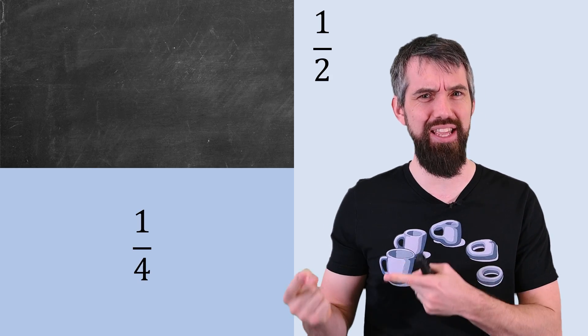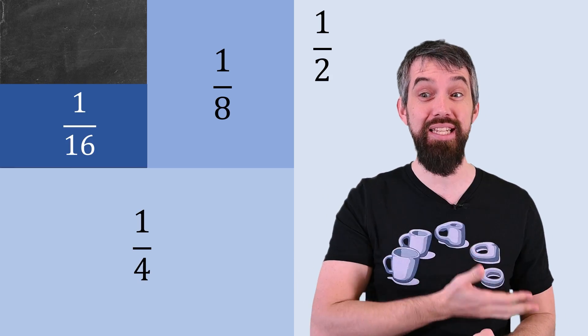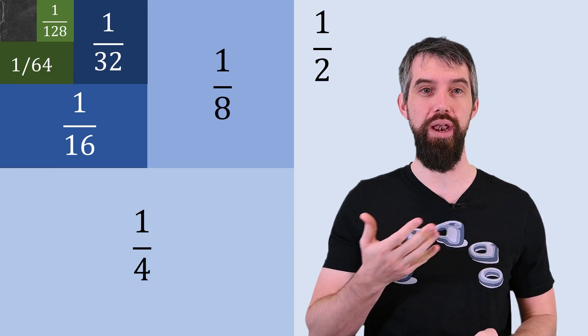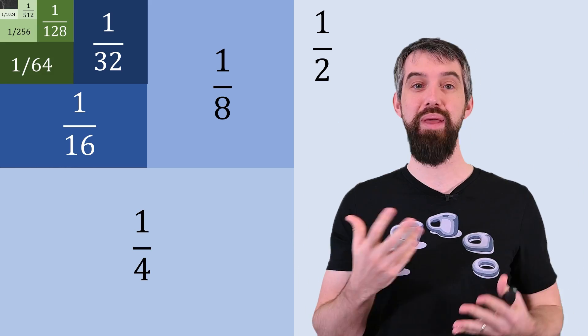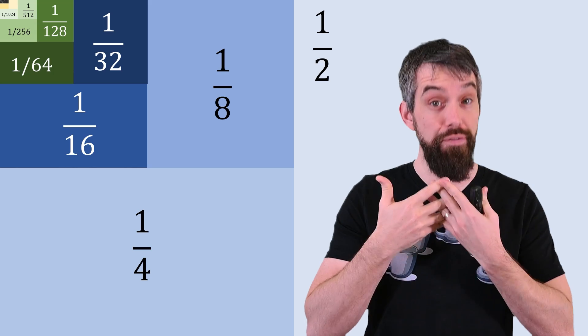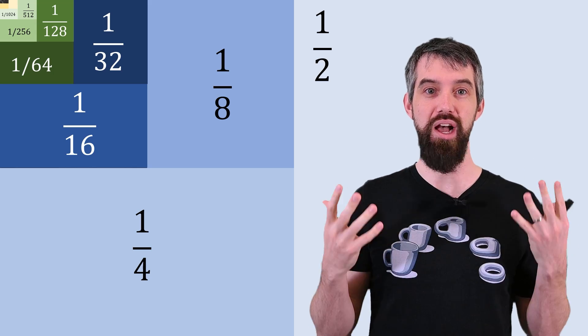I can take the half and divide it in half again, giving me a quarter, an eighth, a sixteenth, a 32nd, and so on. And if you keep going adding infinitely many pieces, you're eventually going to converge to the area of the screen.